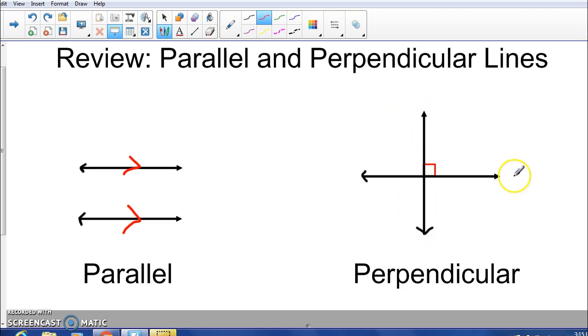These other lines on the right are perpendicular. That means that they touch at one point, right here in the middle. And notice how it has the little box, just like our right angle. Perpendicular lines are special because they meet at exactly 90 degrees. Exactly at a right angle.